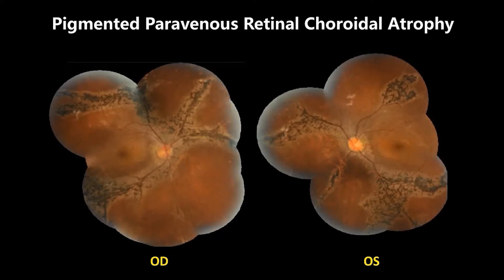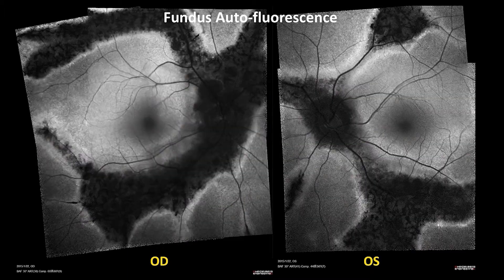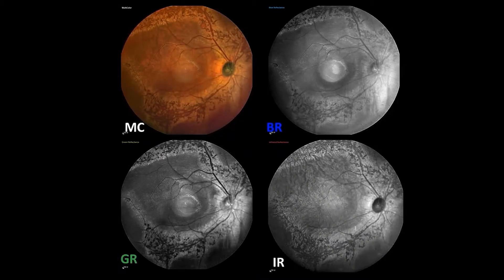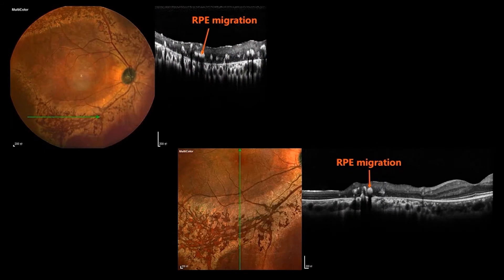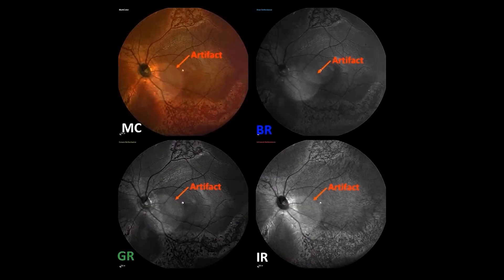Here comes a rare disease — pigmented paravenous retinochoroidal atrophy. There are large areas of hypofluorescence along retinal veins on fundus autofluorescence. Multicolor and other wavelength reflectance showed structural changes. The deep red patches on multicolor represent RPE migration, which was confirmed by OCT. Similar changes are present on the left eye.